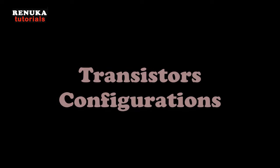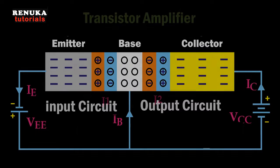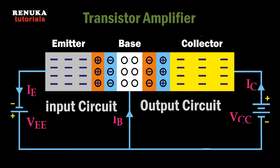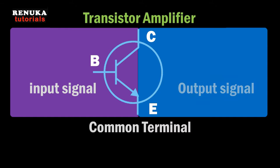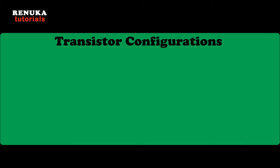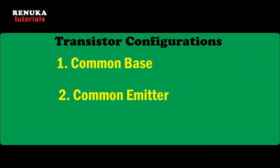Now let us discuss the configurations of transistors. As discussed earlier, the transistor can be configured depending on the connections to the input and output side. For using a transistor as an amplifier, at least two terminals are needed at the input and two at the output. Since the transistor has three terminals, one terminal must be common for input and output. On this basis, transistors are configured into three types: common base, common emitter, and common collector.